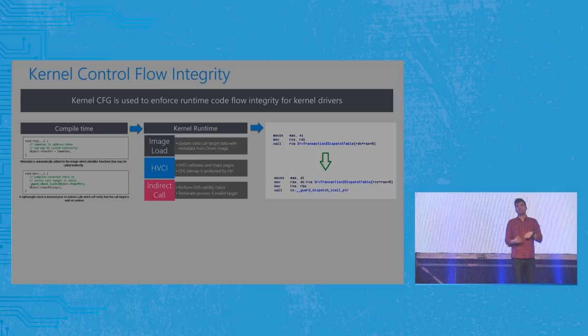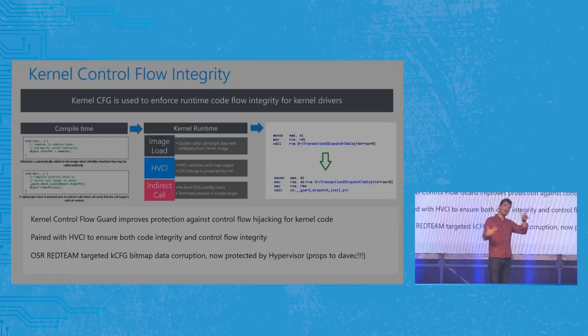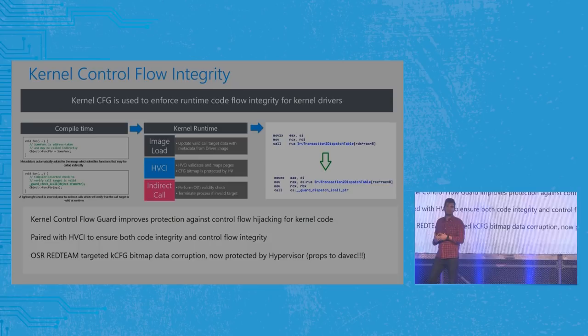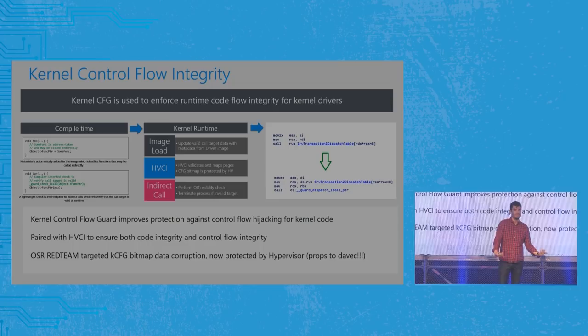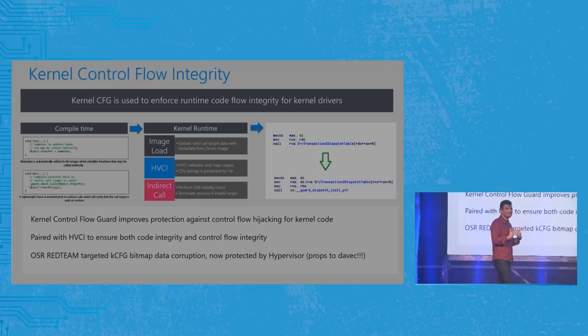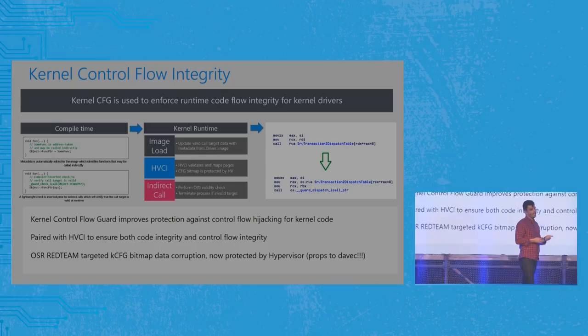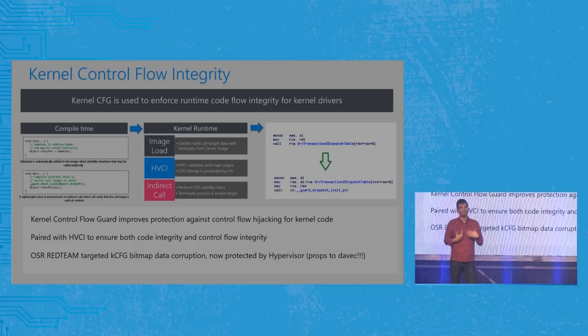When we were originally looking at kernel control flow guard, our red team found that with a write primitive in the kernel — pretty conventional for most exploits — they could just target the kernel CFG bitmap at runtime and change the bits to anything they want. Not a great defense. Dave Cutler saw that and over a weekend produced a patch protecting that bitmap with the HVCI hypervisor. We are now able to strictly enforce control flow integrity in the Windows kernel. That's super important for things like EternalBlue — the engine behind WannaCry and NotPetya — where the function pointer corruption can be protected through KCFG.